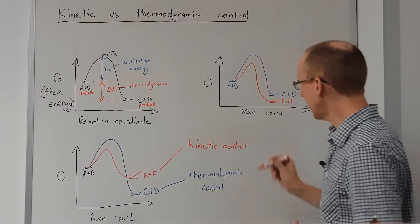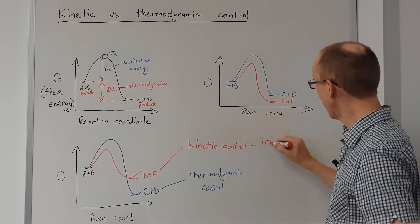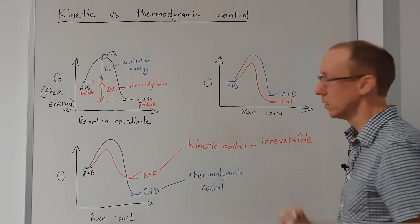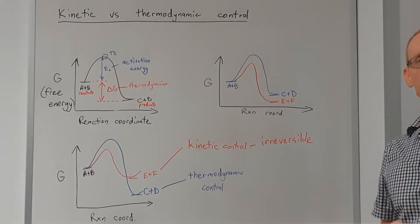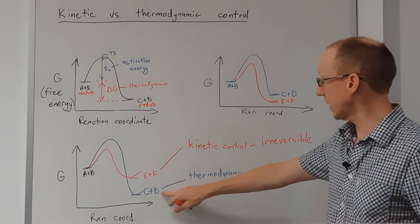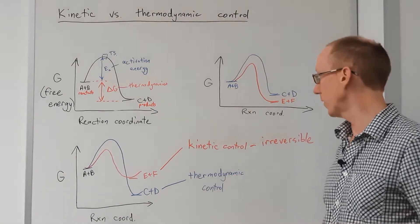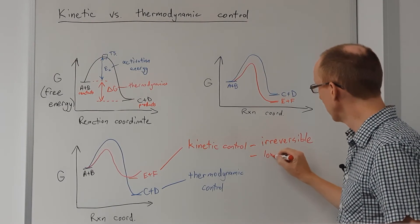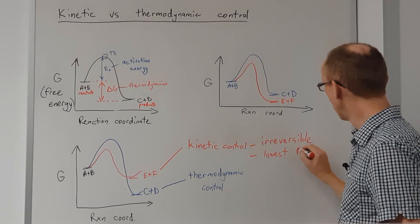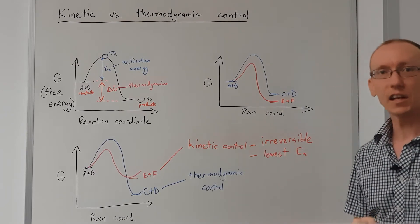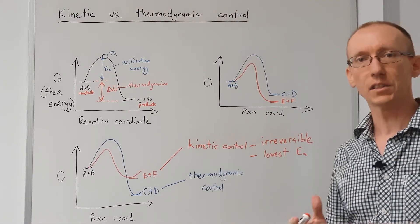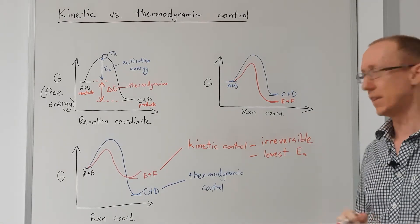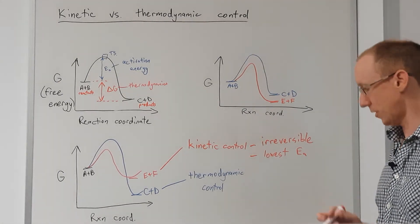So to get kinetic control we'll have an irreversible reaction so that we cannot get the equilibrium established and so we can't get to the more thermodynamically favorable product. And therefore this will be governed by the lowest activation energy. So the transition state that has the lowest energy will be the one that is easier to achieve and therefore will lead to the predominant product under kinetic control.